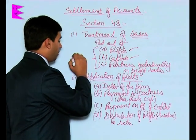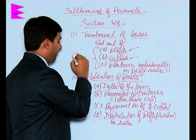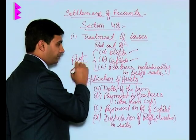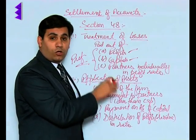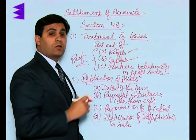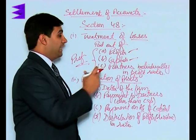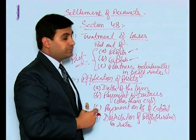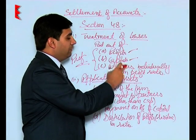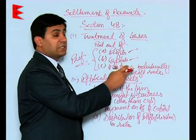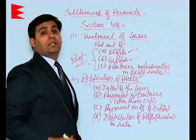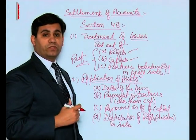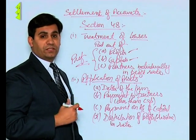Remember, this is the order of preference. That means if all three options are open, profits would be the first one used. Then we move on to capital, and lastly the partners are supposed to bring in additional amounts in the ratio of their profits.